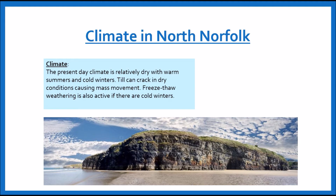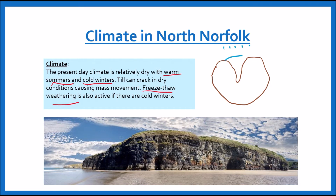So let's talk about the climate in North Norfolk. The present day climate is actually quite dry with some warm summers and some cold winters. The till — the glacial sediments — can crack in dry conditions, which is what causes the mass movement to occur. We can also have freeze-thaw weathering occurring during cold winters. Imagine a rock with a crack filled with water — at night time or during very cold conditions, the water will freeze and expand. If you've ever put half a bottle of water in the freezer you'll notice it expands when it becomes ice, and so as it freezes and expands it causes the rock to crack further open, making it quite weak and unstable.